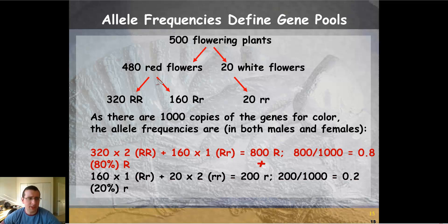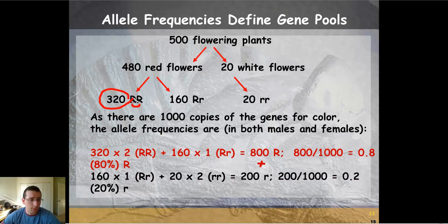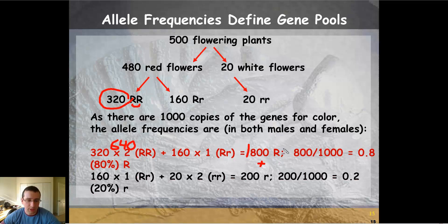To determine allele frequencies in the population, consider that the homozygous dominant genotype has two big R alleles. So you take 320 times 2, which gives 640 big R alleles. There's another 160 big R alleles in the heterozygous genotype. When you add those together, there's a total of 800 big R alleles in this particular population.